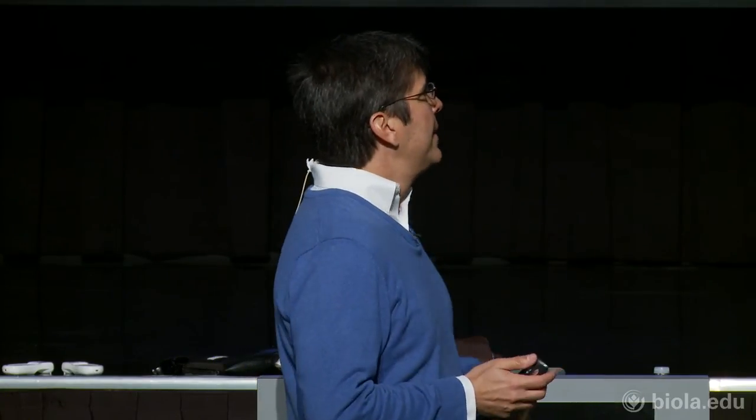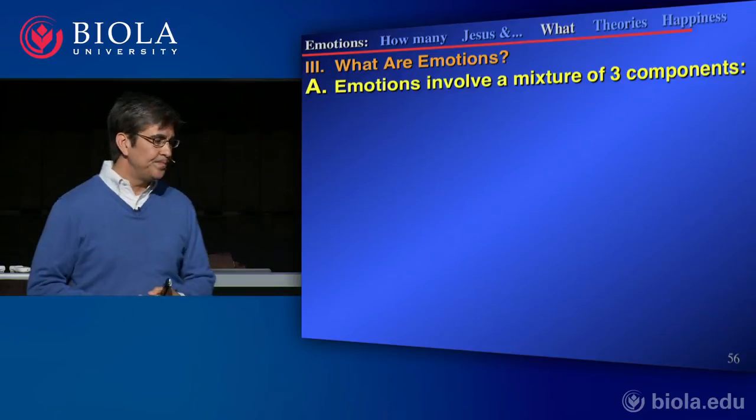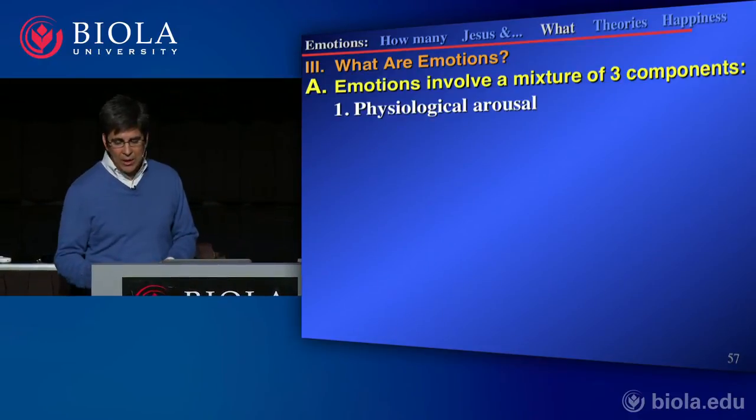Let's transition to what emotions actually are. Emotions are made up of a variety of things — we've talked about the face. Emotions involve a mixture of three components. The first is physiological arousal — for some people, an emotion begins and they feel it in their bodies. They're aware it's happening and their body tells them, sometimes in a way that begins a process of running away when afraid.